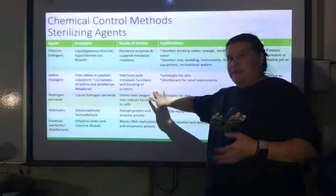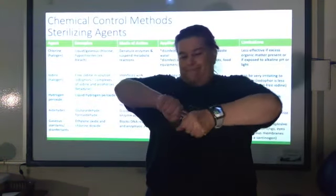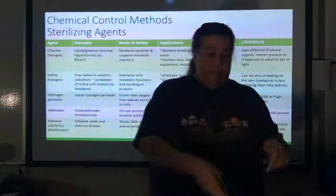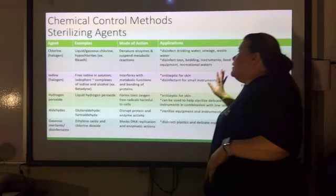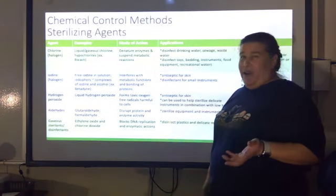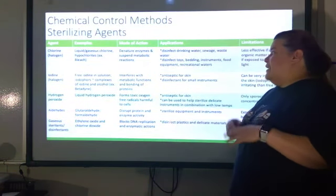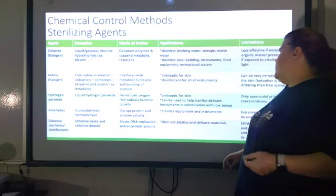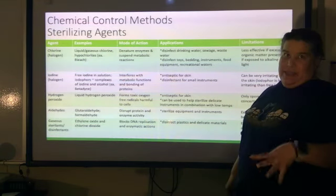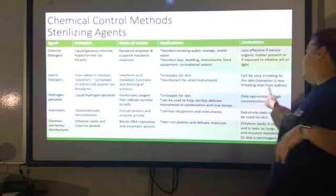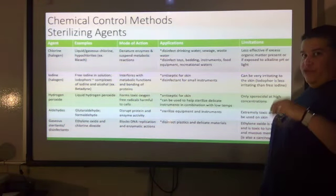We talked about coenzymes before. In order to metabolize and break stuff apart, proteins have to be able to grab hold of things and break them. If iodine interrupts that, those metabolic processes stop. It can be used as an antiseptic for the skin — betadine is very commonly used before surgery. It can also be used as a disinfectant for smaller instruments. The limitation is that iodine can really irritate the skin, especially if you're highly sensitive to it. The iodophore form is less irritating than free iodine.